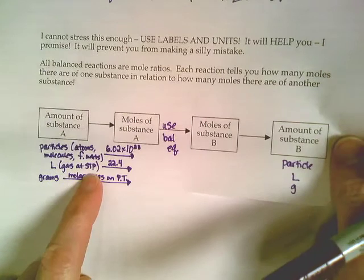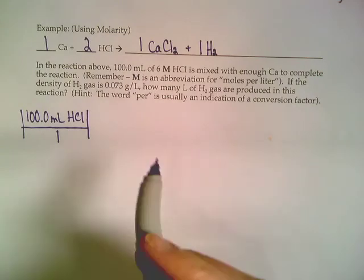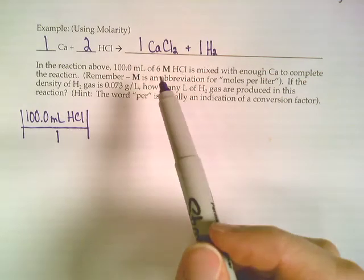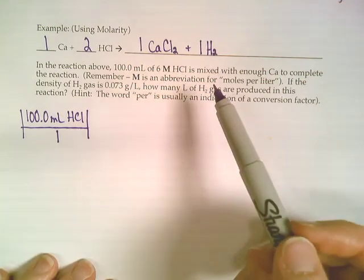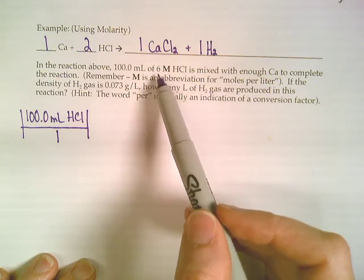We can't use that 22.4 because those are only for gases at STP. Hydrochloric acid is typically an aqueous solution, so we can't use that 22.4. We have to get it into moles some other way, and it gives us a way to get there.